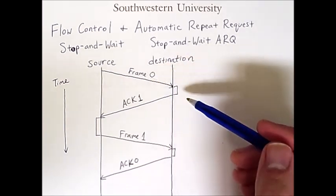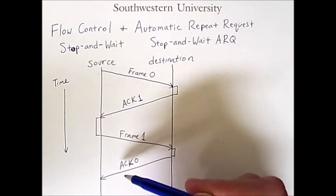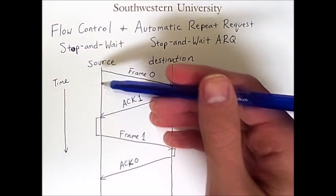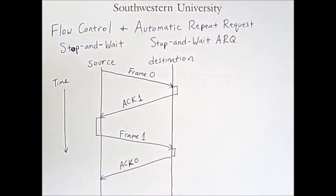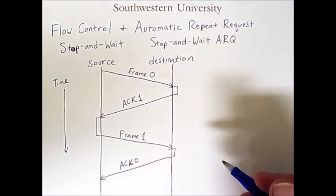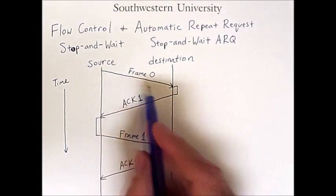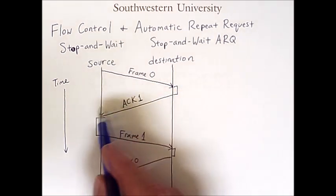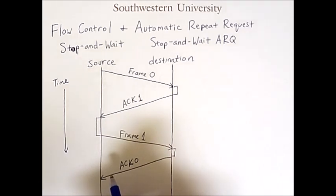Once frame zero is received, it says you can send frame one. Once frame one is received, it says you can send frame zero. The source is sending more than two frames — it keeps sending more and more — but each frame will be labeled with either a zero or a one. So if all is going well, this process repeats back and forth more or less forever: send frame zero, acknowledge asking for frame one, send frame one, acknowledge asking for frame zero, and the whole process repeats.